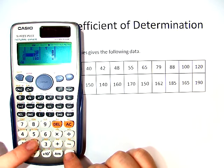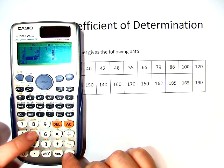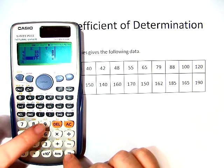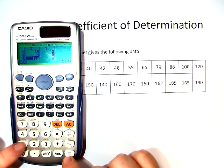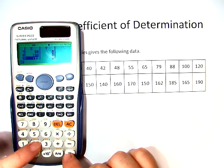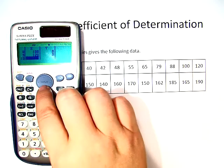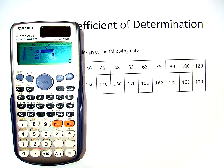40, 42, 48, 55, 65, 79, 88, 100, and 120. We hit the down button, and we have to move over to go into y.